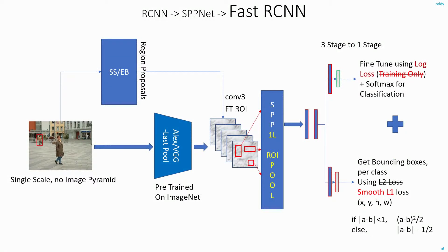This paper was basically a set of experiments with conclusions that led to modifications of the network. In SPPNet they used images of 5 different scales for processing instead of 1. But experimentally they found that using 5 different scales gives only a 0.5% increase in accuracy but takes 4 times longer. So they got rid of the 5 different scales and used a single scale for all processing.